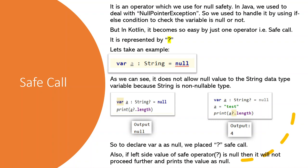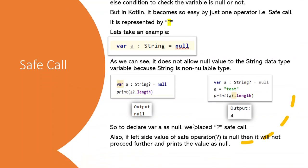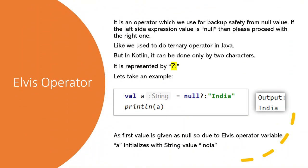And if we are printing its value as a.length, it will print as 4, because in this case a's value is not null. It is test. Next, Elvis operator.